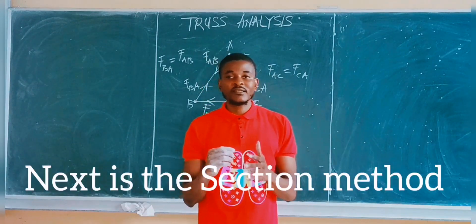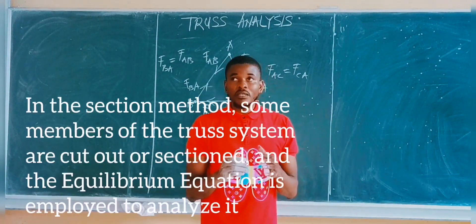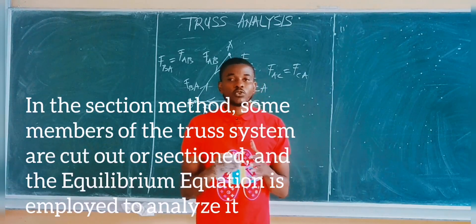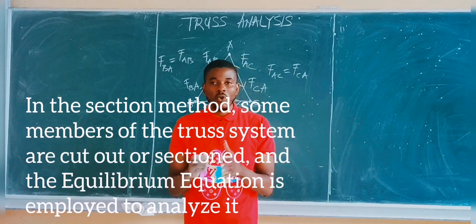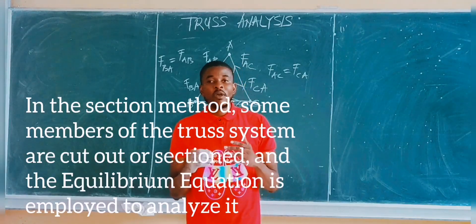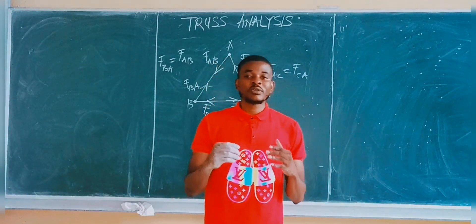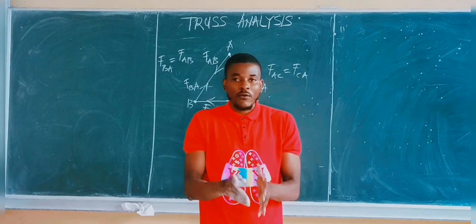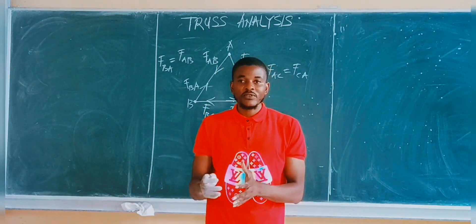The next method of analysis is called the section method. In the section method, some members of the truss system are sectioned out or cut out and then the equilibrium equation is applied. When using the section method, at least three members of the truss system must be involved in the section.